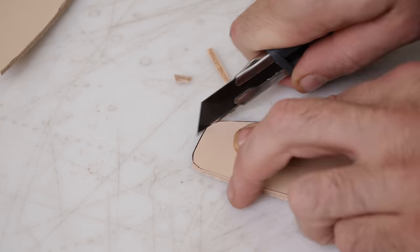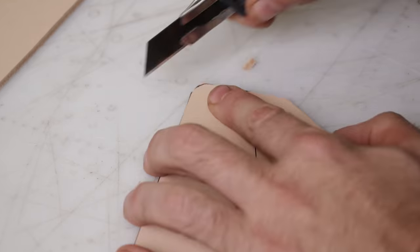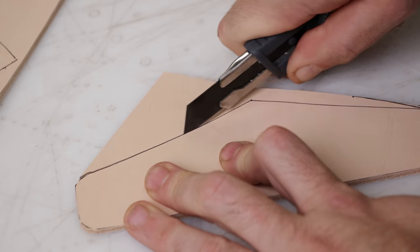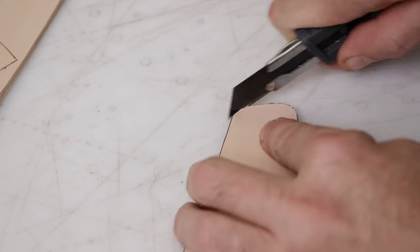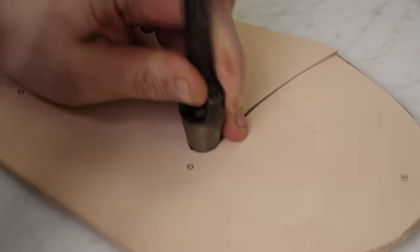If you guys are hand stitching these together, there's a specific way you should do it to get all your holes perfectly lined up, and that's taping your pattern to the leather and punching through everything. I'm going to put a link right here to another video of mine where I do this. You can check that out.